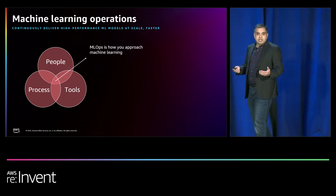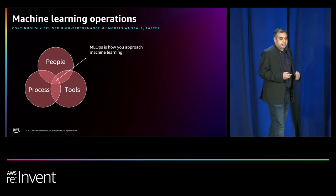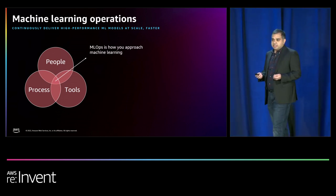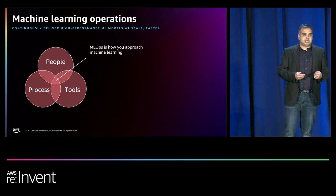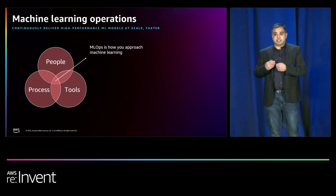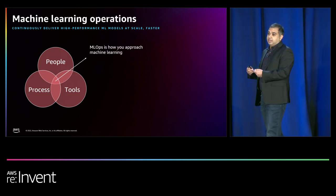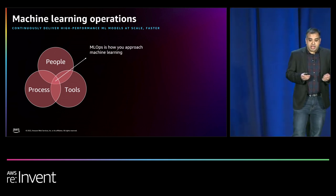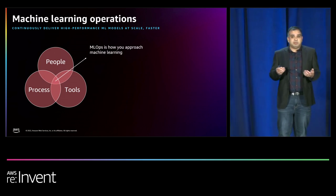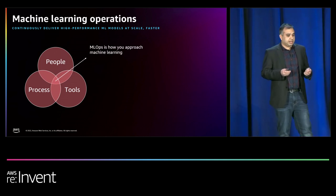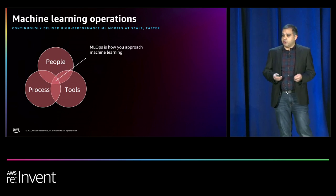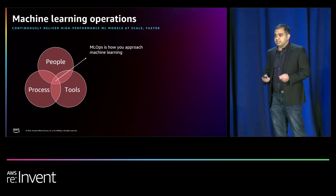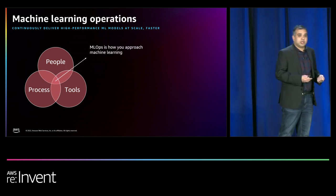MLOps has many different meanings. Broadly speaking, we refer to it as the process of continuously delivering high-performance ML models at scale. It consists of multiple activities that take place across the entire machine learning lifecycle — concerning development, productionization, and maintenance of an ML system in production. MLOps is not just one capability you can enable; it's a living and breathing discipline that continuously evolves, practiced by different personas who work independently and together, following specific processes, mechanisms, and best practices using purpose-built tools.